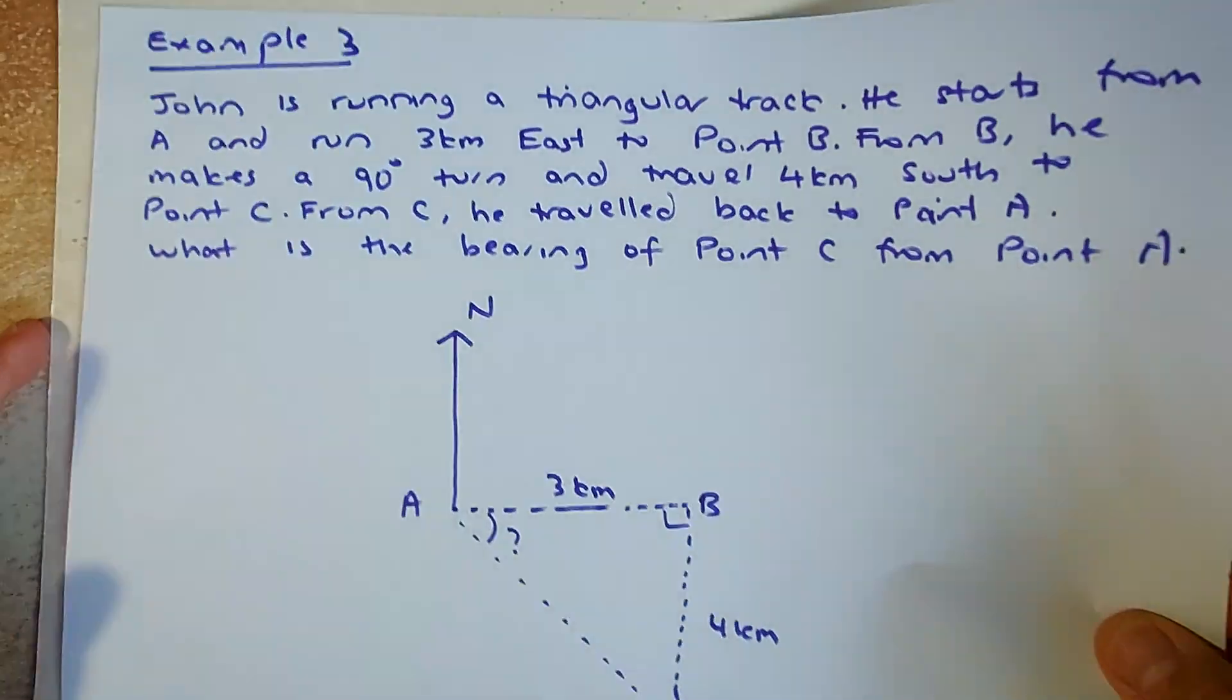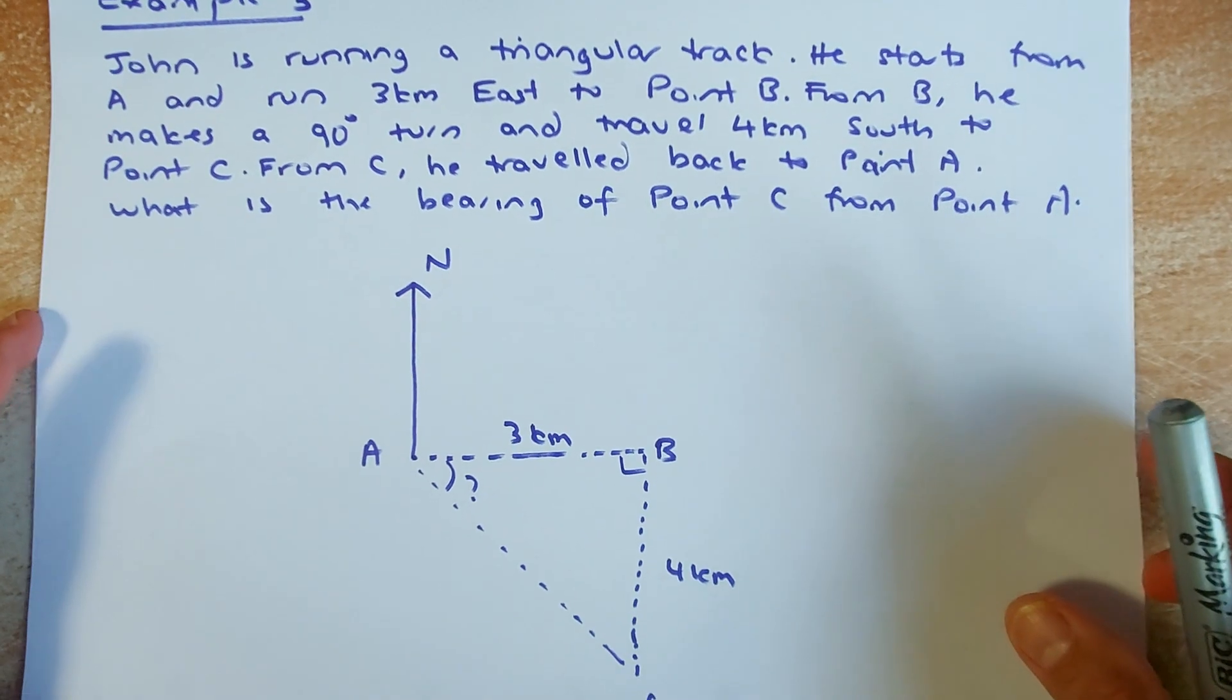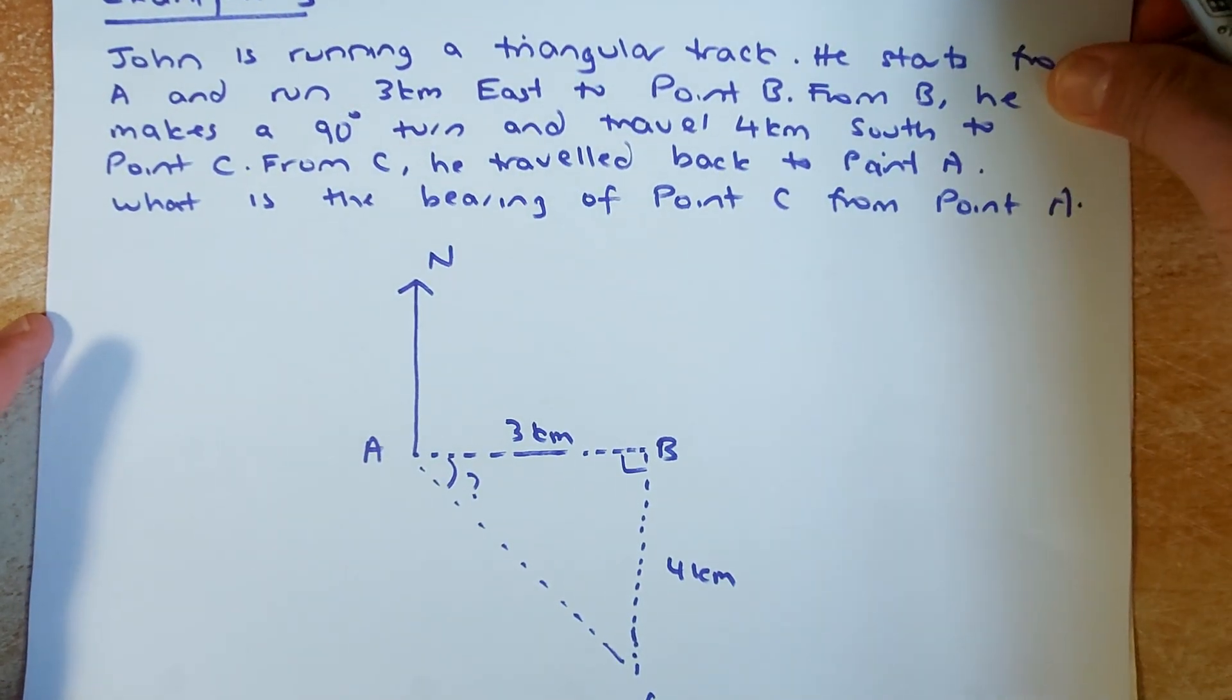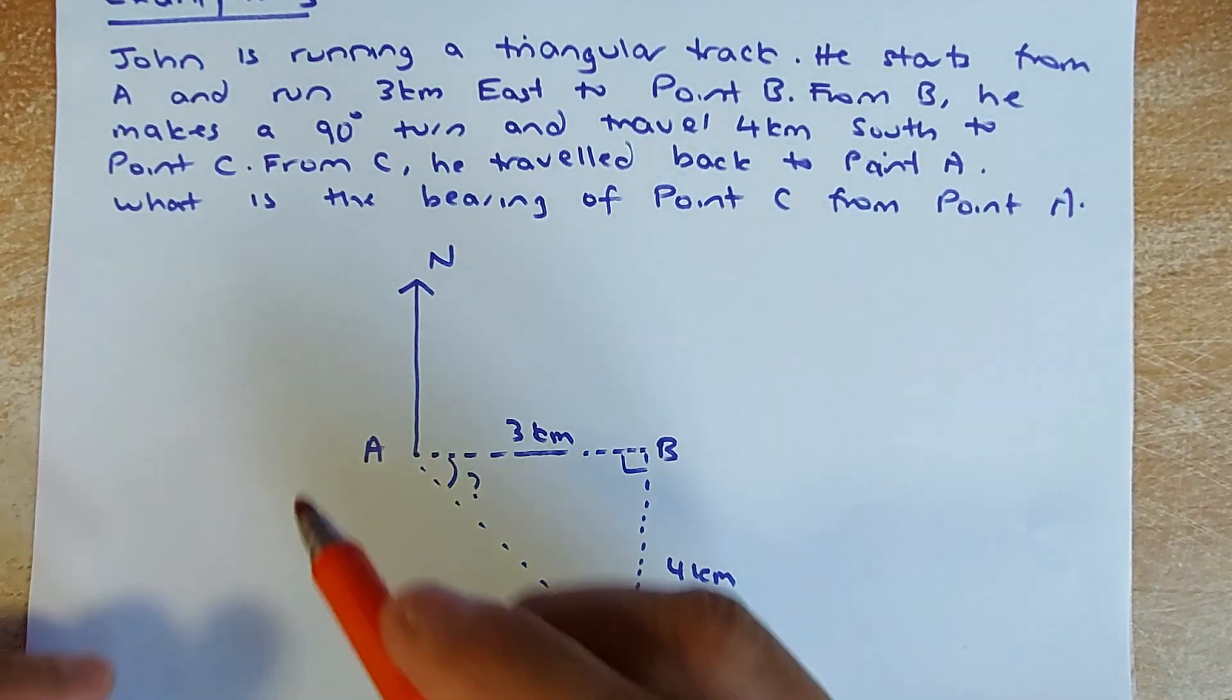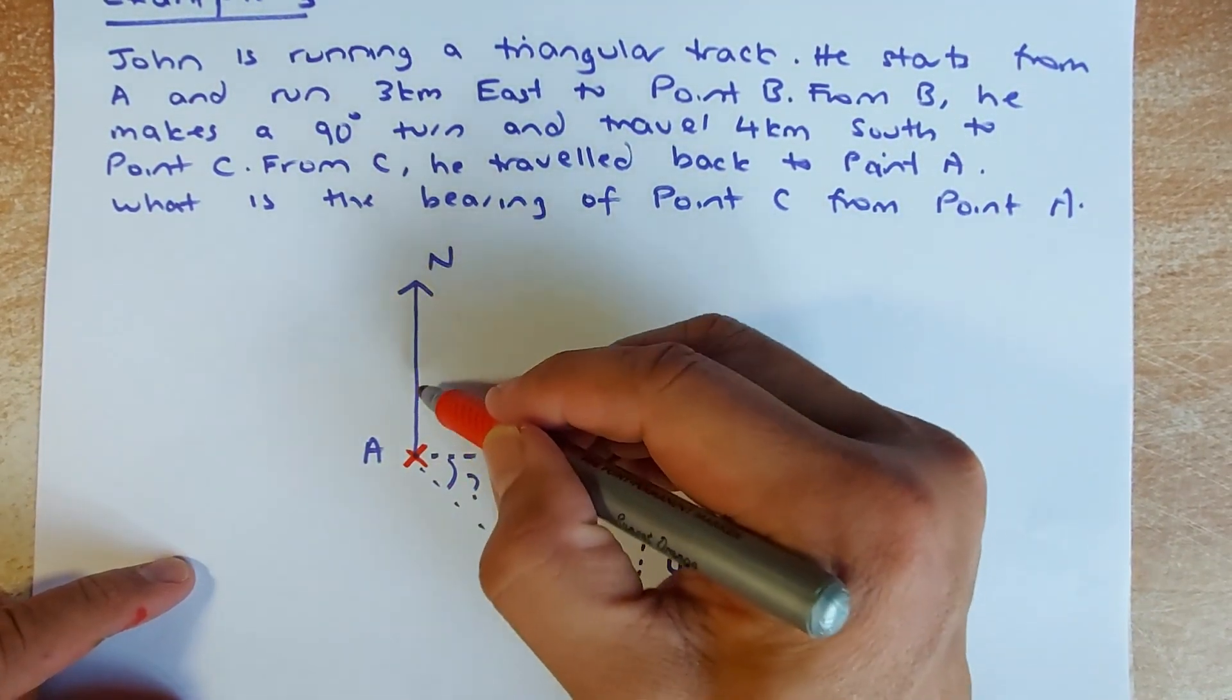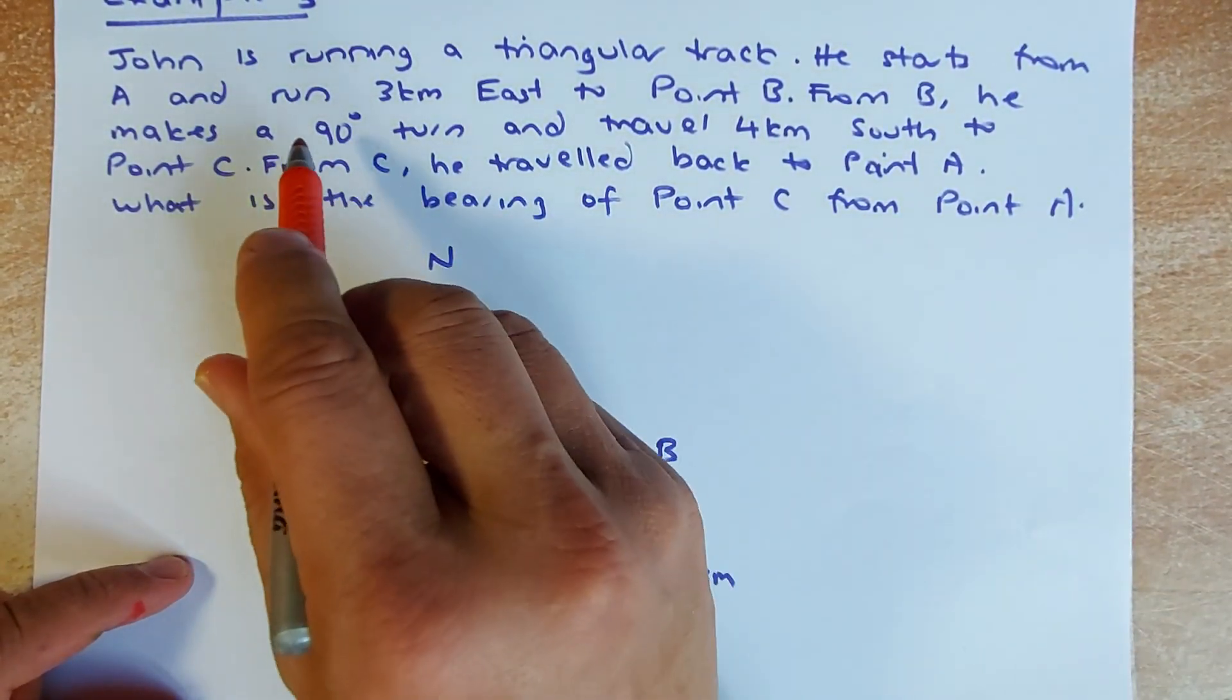The last one is going to be the type of question you will get in N-level 1. If you are doing level 2, of course it will be slightly different. You have to do sine rule and cosine rule. So John is running in a triangular track. He starts from the point A, so the north here. You're going to start the bearing. He travels, he runs 3 kilometers to the east.